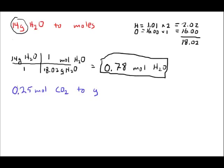In our next question we're looking to convert 0.25 moles of carbon dioxide to grams of carbon dioxide. So once again I'll need to determine the molar mass of this compound. Carbon has a mass of 12.01. That will be multiplied by 1.